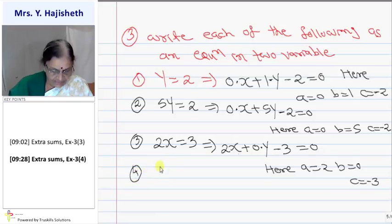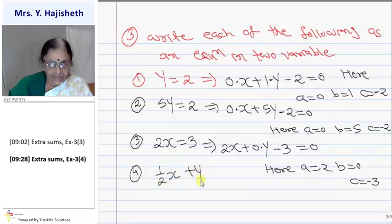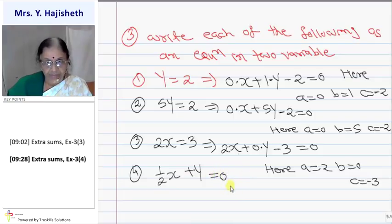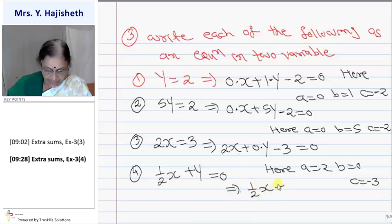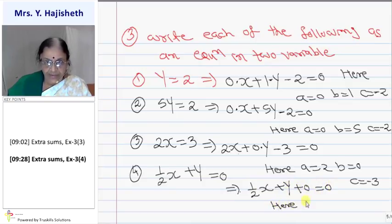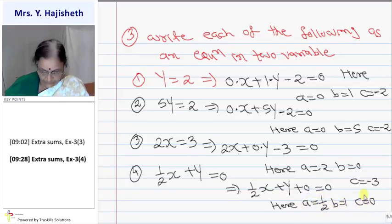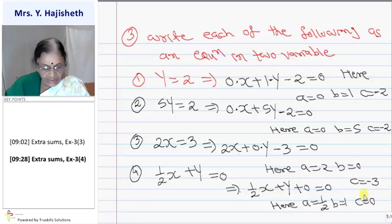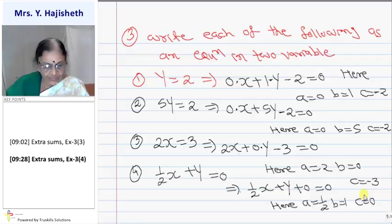Next: one-half x plus y equals zero, which implies one-half x plus y plus zero equals zero. So here a is one-half, b is one and c is zero. This is the way to express a linear equation in one variable as a linear equation in two variables.